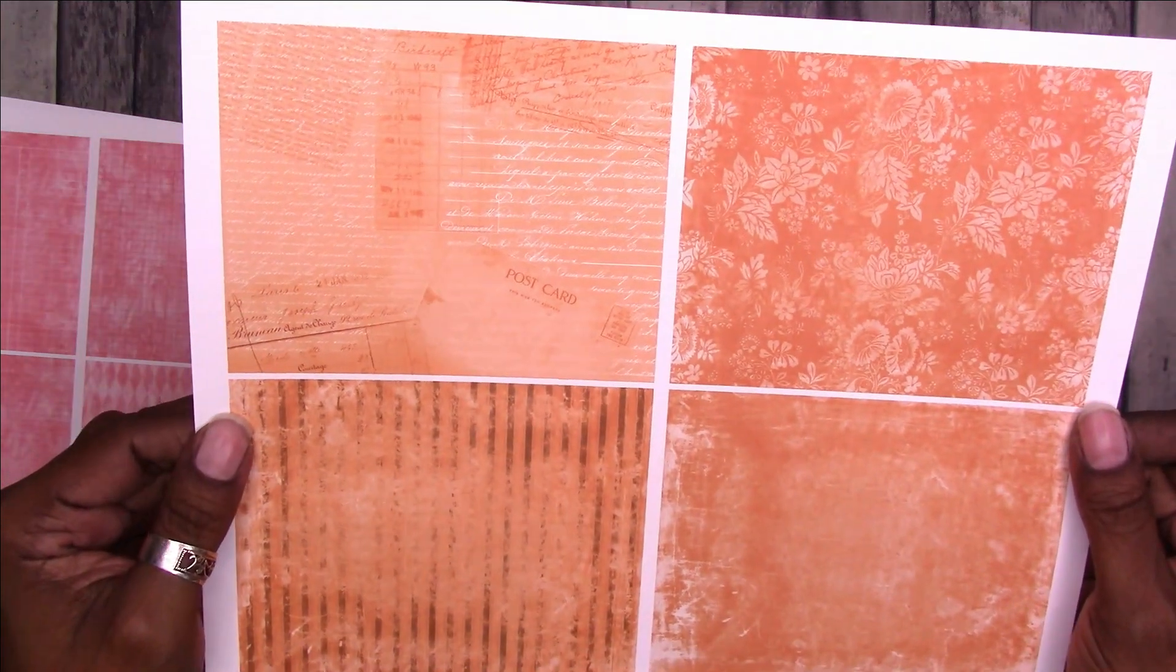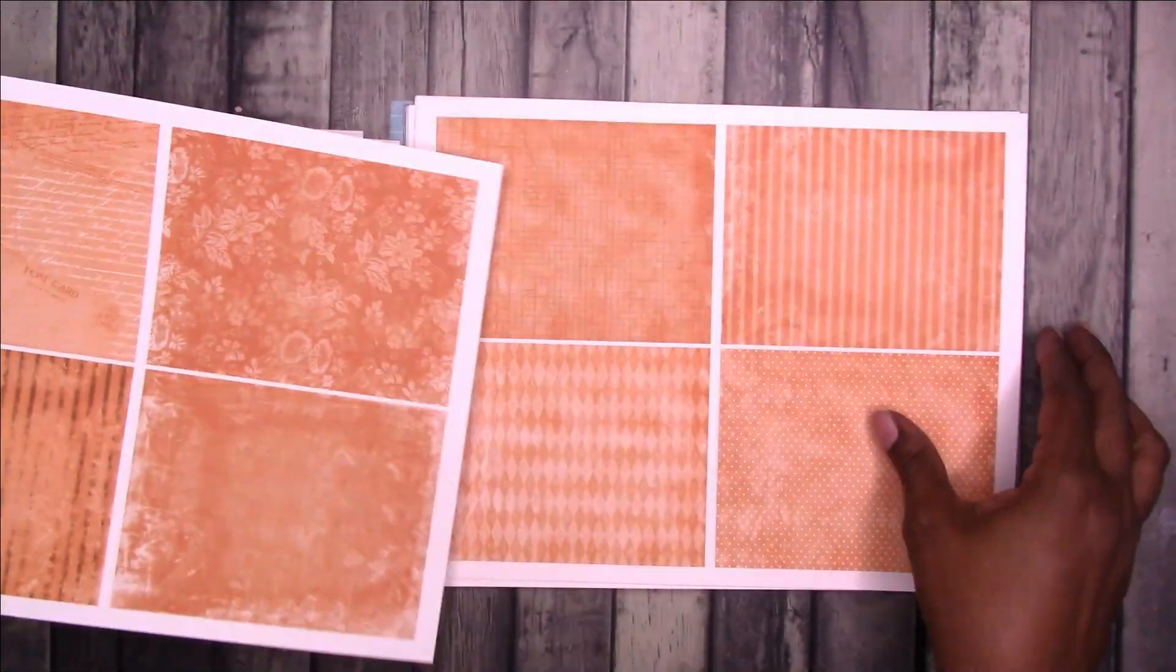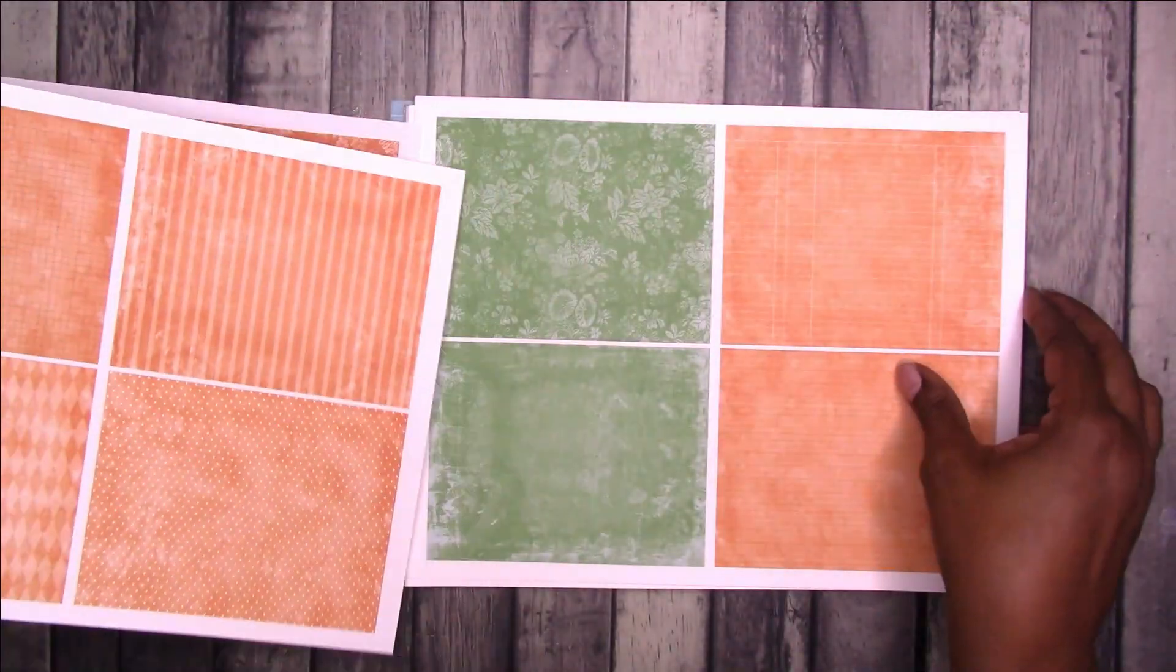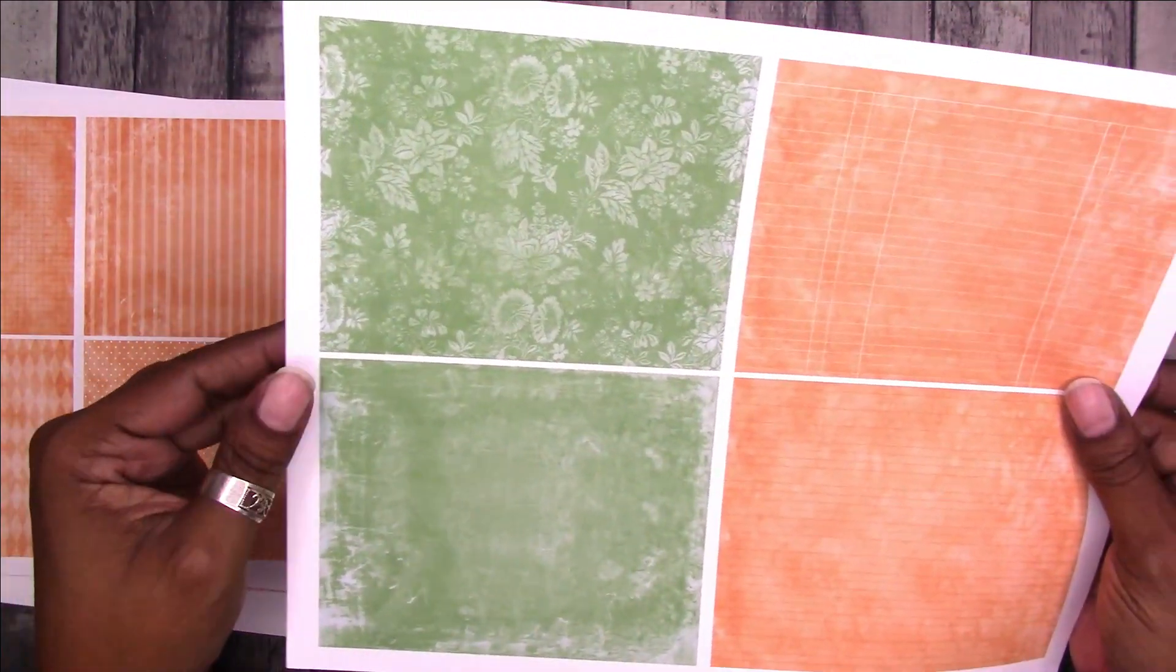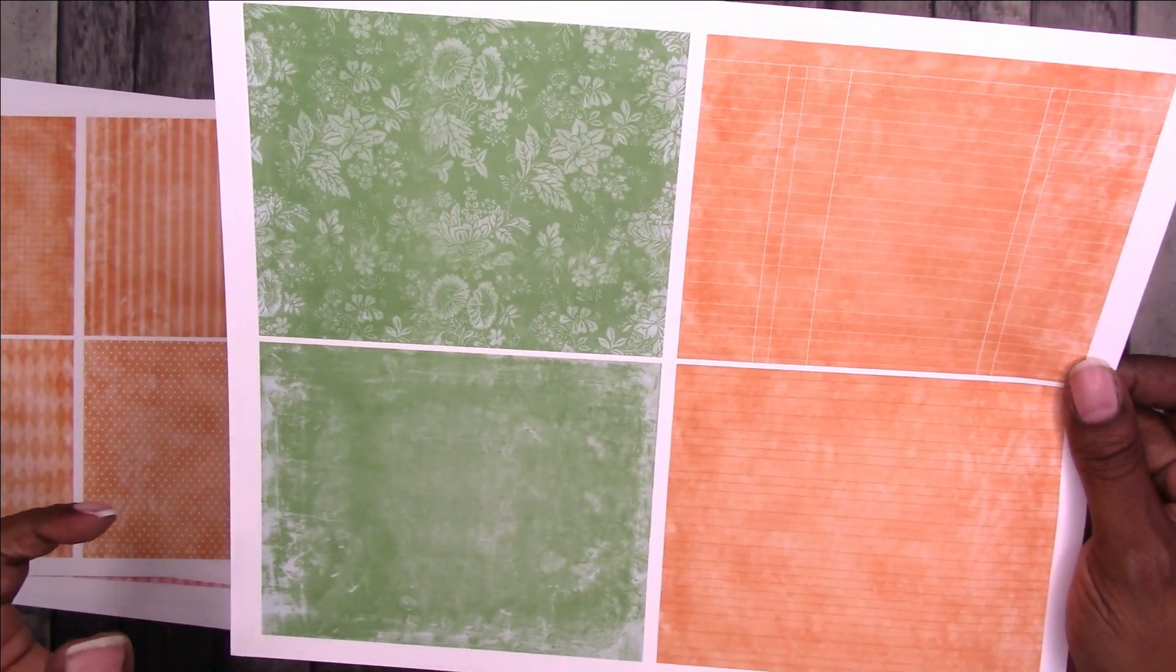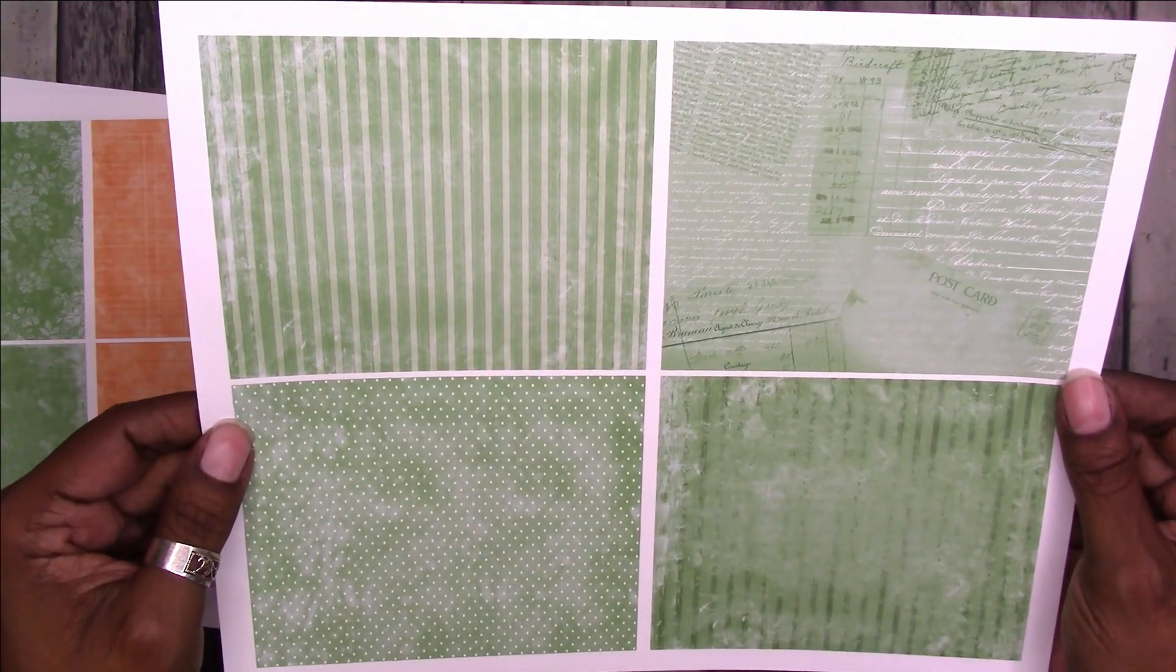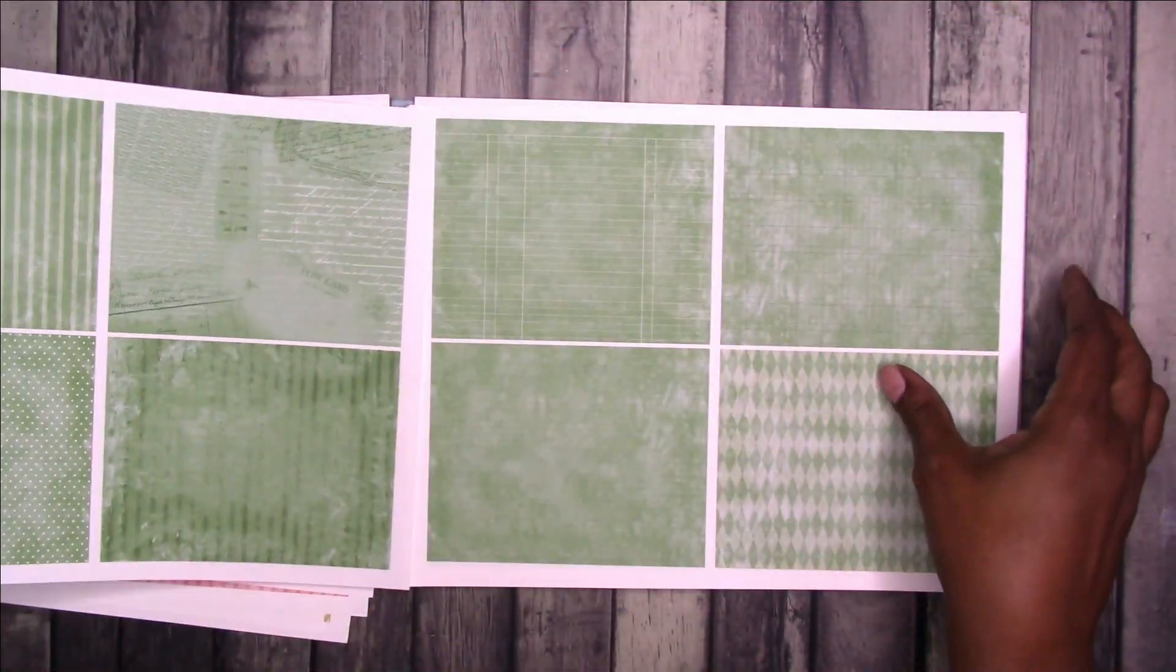And this goes into the orange. So I did a rainbow of color so no matter what papers you're working with you'll have a backing paper that should work well with that paper. I also threw in some neutrals just in case.